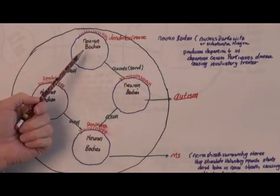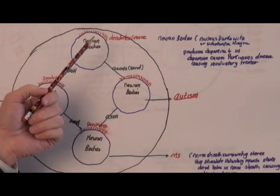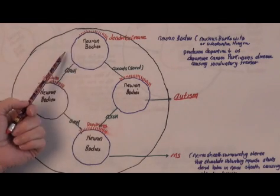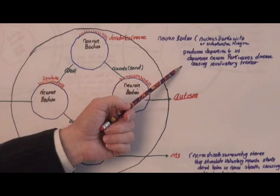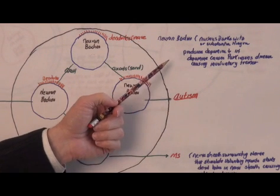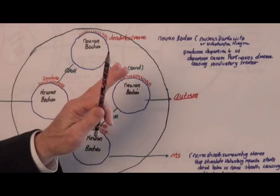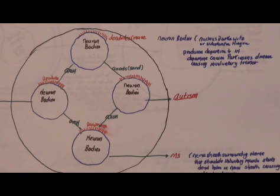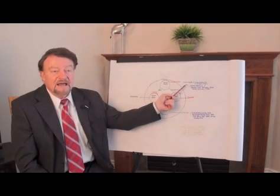But this particular neuron body produces dopamine and when it stops working at its full efficiency your dopamine levels drop and when your dopamine levels drop it causes Parkinson's disease and of course the Parkinson's disease creates an involuntary tremor. So usually if you see people that are just tremoring involuntarily it's due to Parkinson's disease, a lack of dopamine.